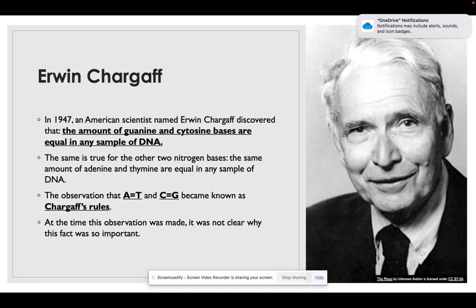In 1947, Erwin Chargaff was an American scientist and he discovered that the amount of guanine and cytosine bases were equal in any sample of DNA. The same was true for the other two nitrogen bases: adenine and thymine were the same in any sample of DNA as well. So the observation that A equals T and C equals G became known as Chargaff's rule. At that time, the observation was made, it was not clear why that was so important, but you will certainly find out as we move along.